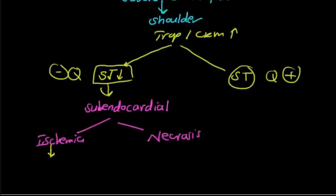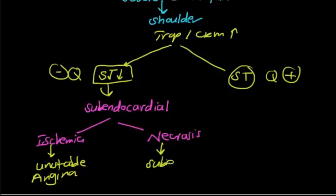If the problem is ischemia, this is unstable angina. If the problem is necrosis, it is subendocardial MI.